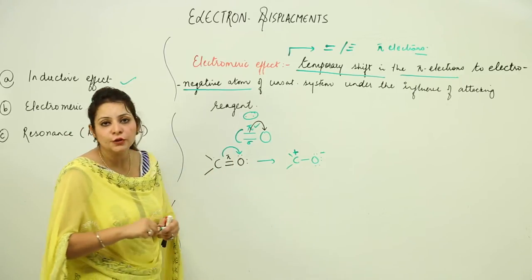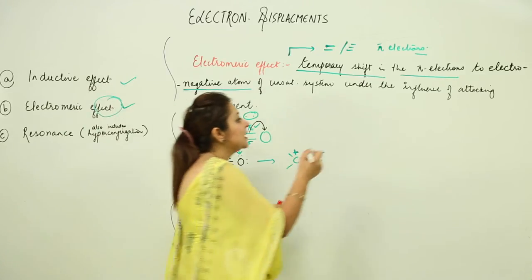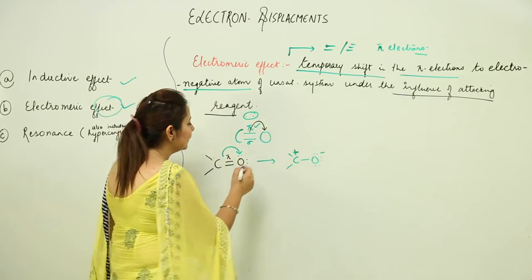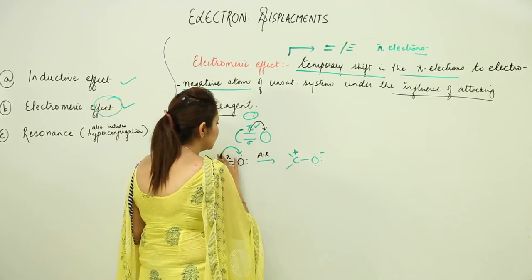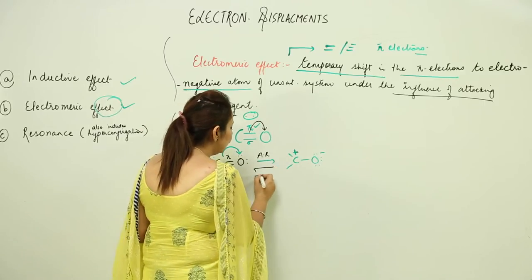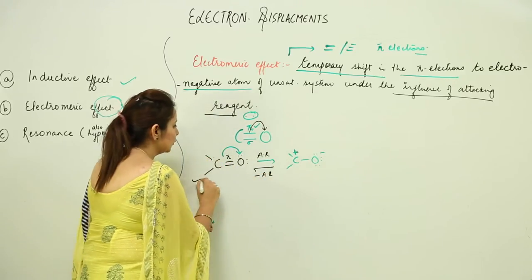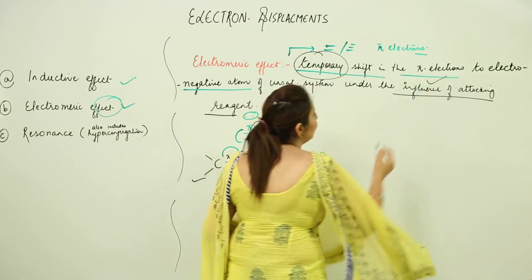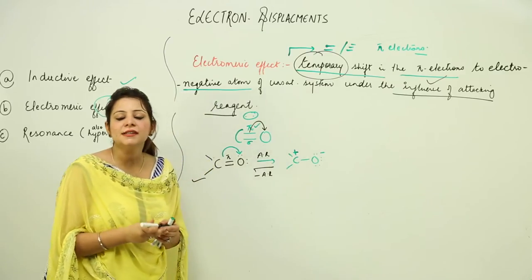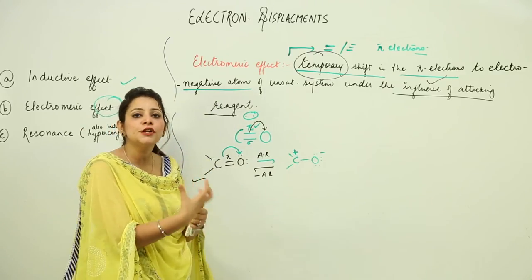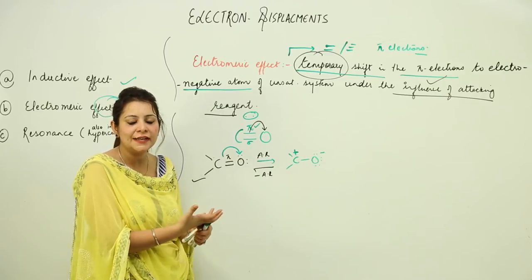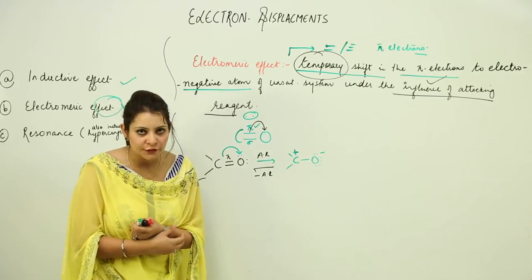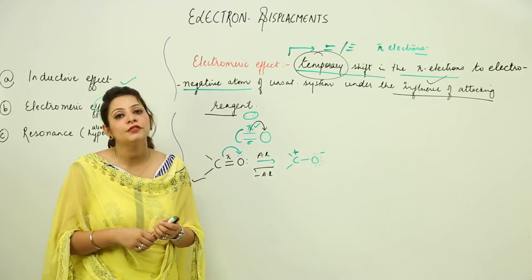Now, when does this displacement take place? Strictly, it takes place only under the influence of the attacking reagent. If there is an attacking reagent approaching, then only you can observe this kind of displacement. Otherwise, if you remove the attacking reagent, the molecule will return to its original form. So we can say it is a temporary effect, and it occurs only under the influence of the attacking reagent.